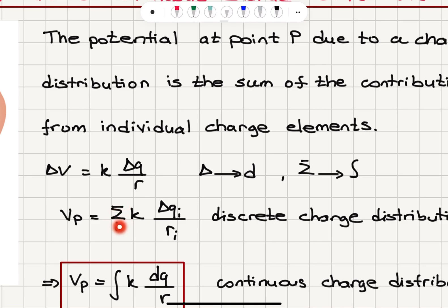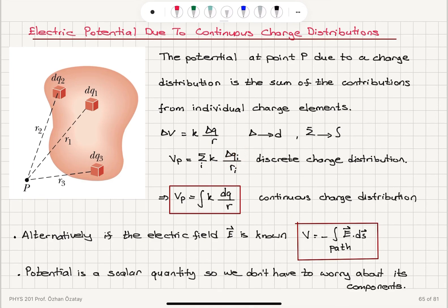So sum over i k delta qi over ri, for each point charge delta qi at a distance ri from point p we have the sum of the contributions giving us the total potential. This is the discrete charge distribution case.